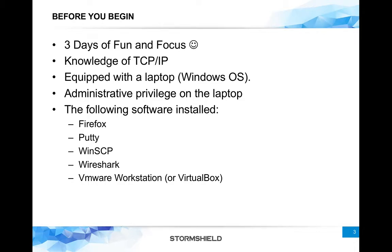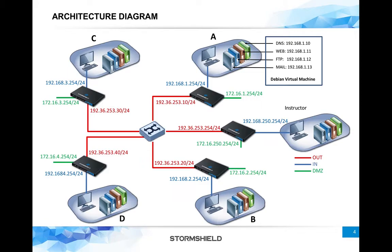You should have the following software already installed: Firefox browser, PuTTY or any equivalent SSH client to connect to the firewall and run commands, WinSCP which is the Windows version of SCP for copying files between your laptop and the firewall, Wireshark for packet captures, and VMware Workstation or VirtualBox to run the Stormshield virtual appliance and a small virtual server.